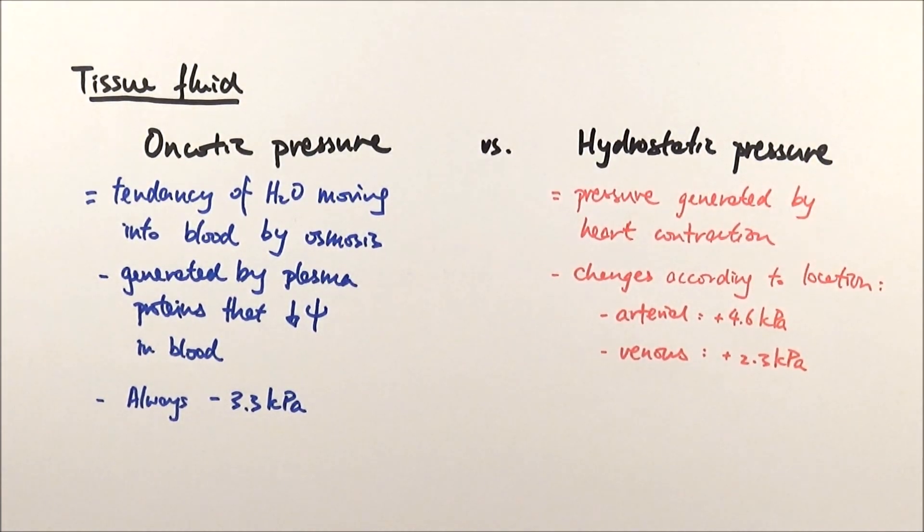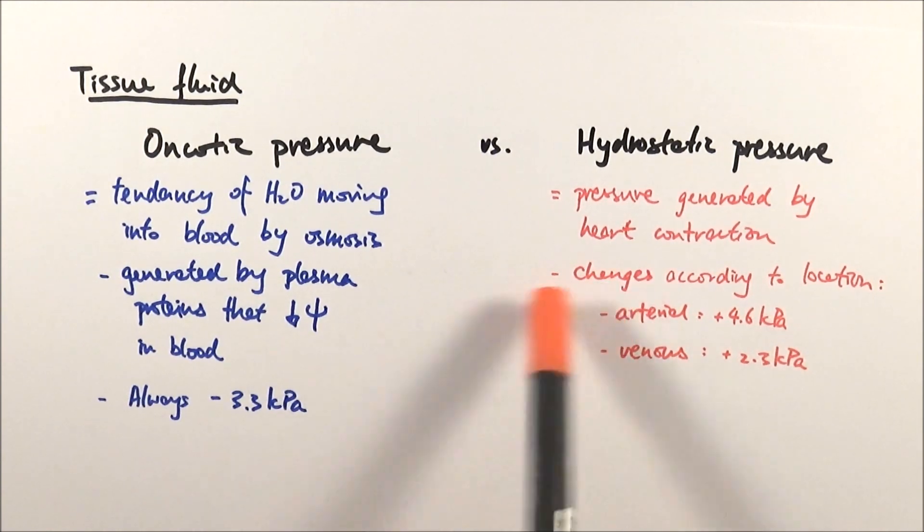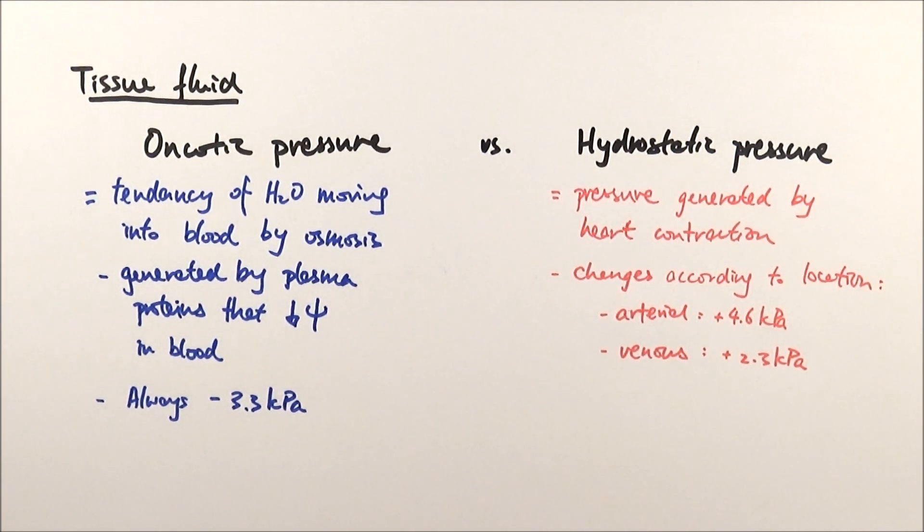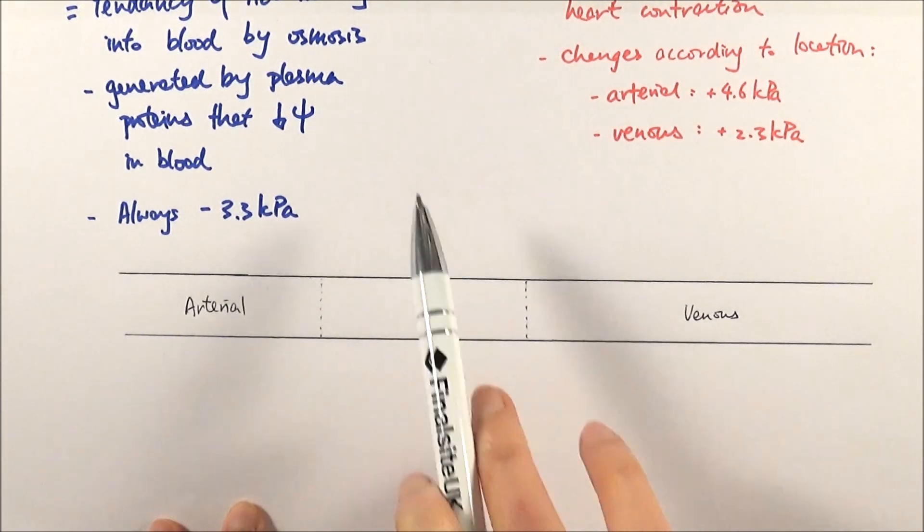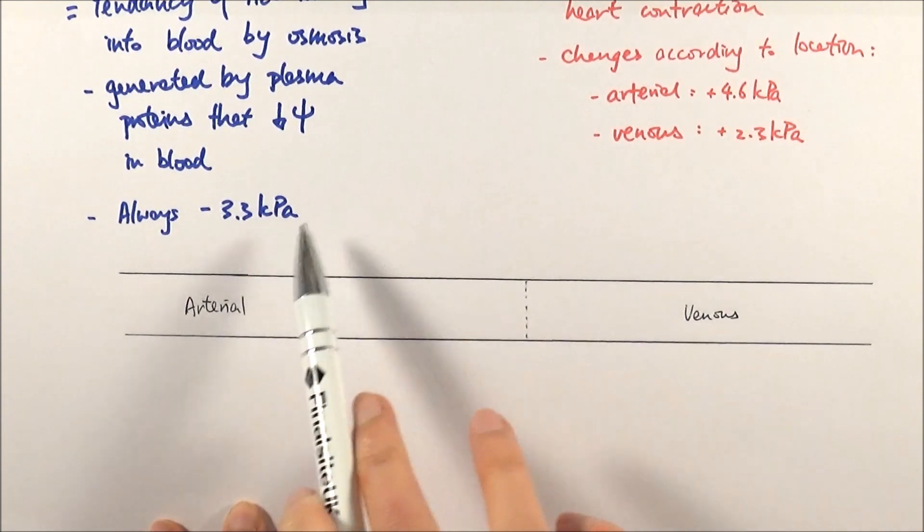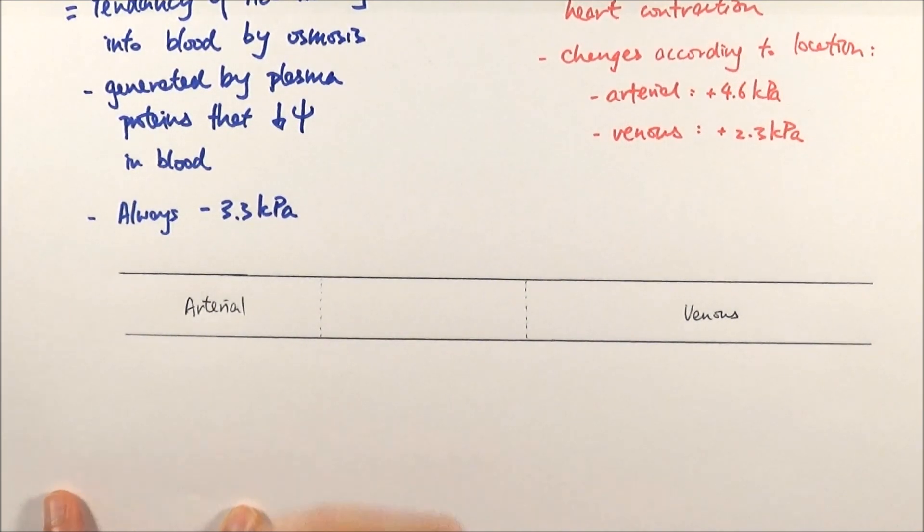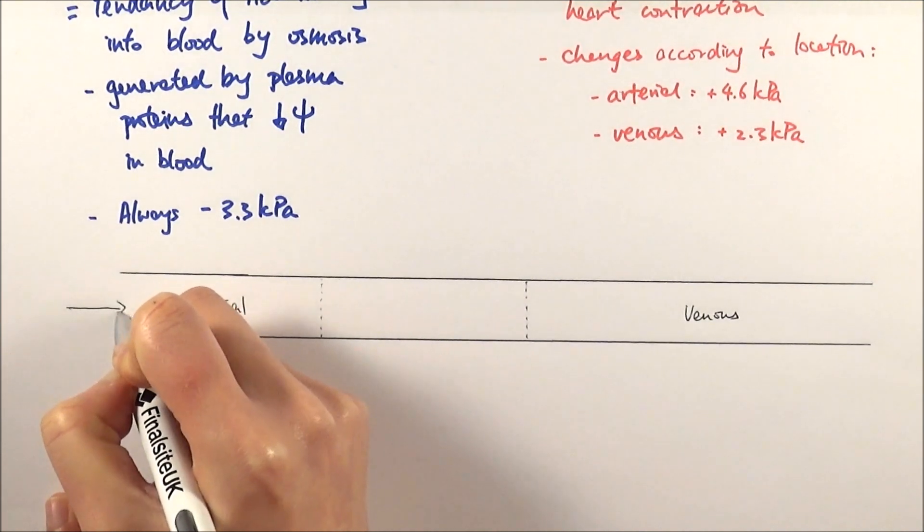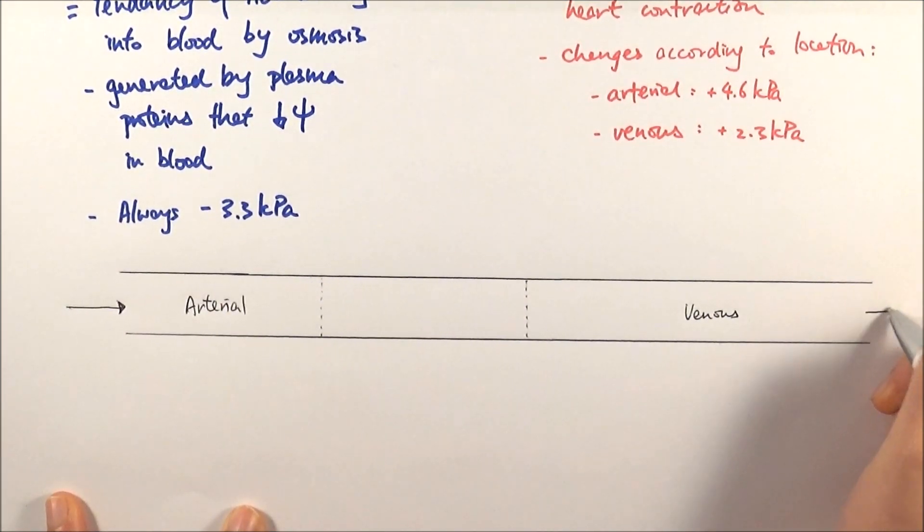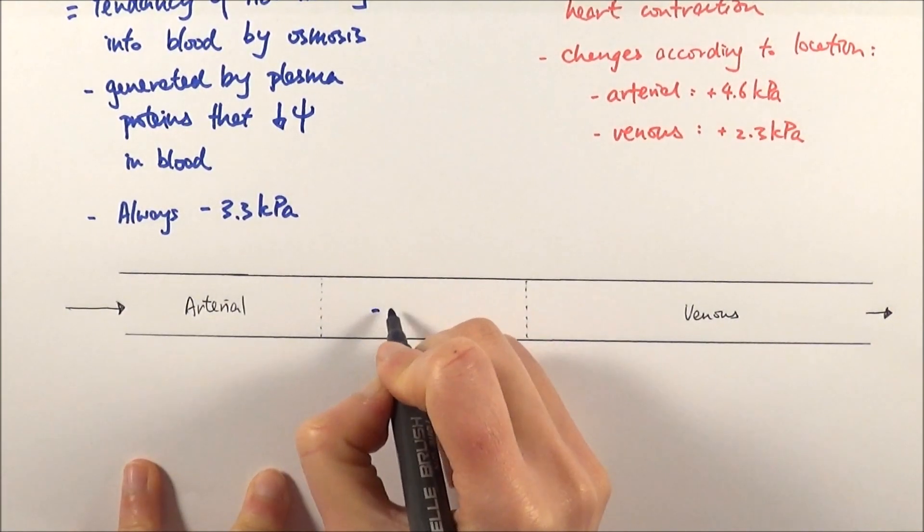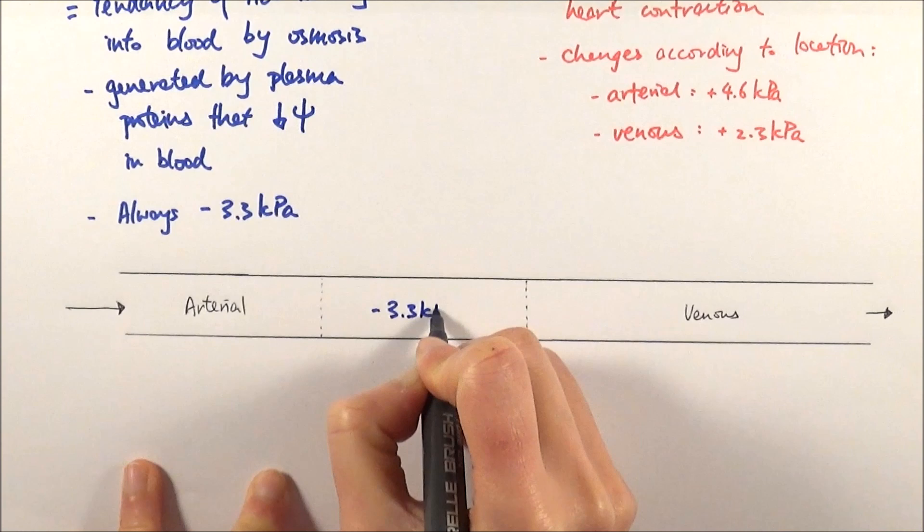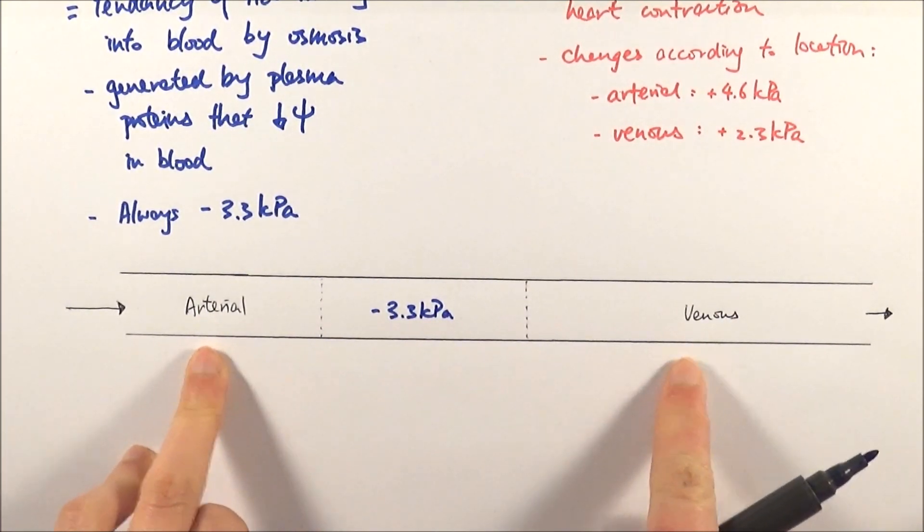It's important to know these numbers because you can compare these two at different parts of the capillary to determine how tissue fluid is formed and whether it's going in or out of the blood. Here is a simulation of the capillary—this bit here is the capillary, and the tissue fluid and cells are surrounding it. This is where blood comes in from the arteries, and this is the direction of blood flow. Within the capillary, oncotic pressure is always minus 3.3 kPa, and hydrostatic pressure changes.